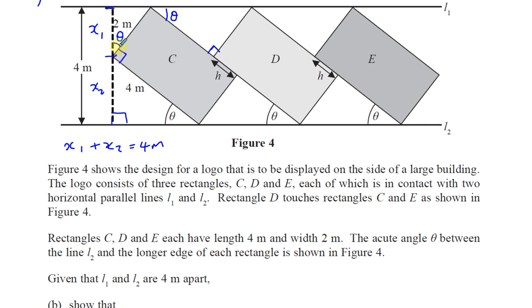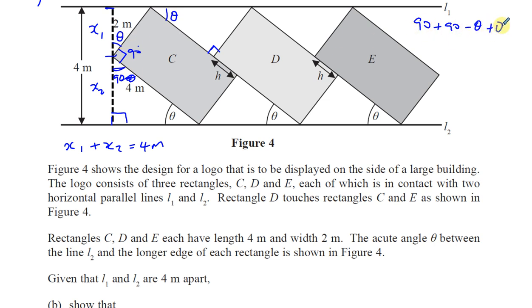We have theta here and theta here. Because these two angles must add up to 90 degrees — if this is theta, then this is 90 minus theta. So you get 90 minus theta plus 90, which gives 180 minus theta. And that must be theta because the total angle must be 180. You have 90 plus 90 minus theta; you need to add theta to make 180. So this angle must be theta.